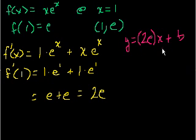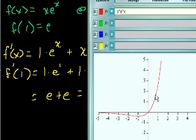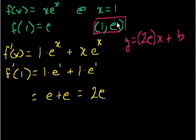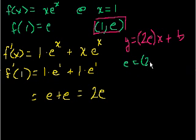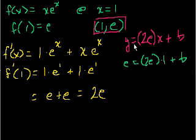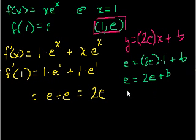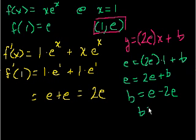We know a point that lies on this tangent line: (1, e) — the point where we're finding the tangent. So we substitute it in: e = 2e·(1) + b. Solving: e = 2e + b, so b = e − 2e = −e. Note that e is a constant number, like pi — not a variable.